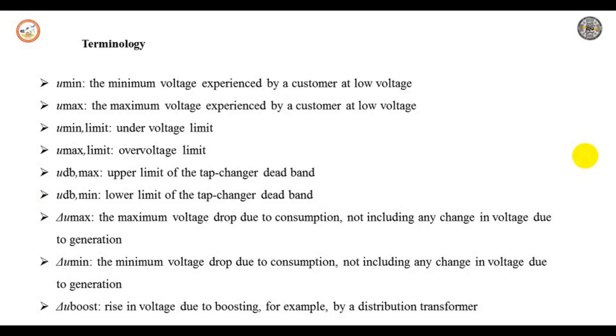Delta U-maximum is the maximum voltage drop due to consumption, which does not include any change in voltage during generation. Delta U-minimum is the minimum voltage drop due to consumption — again, it does not include any change in voltage due to generation. Delta U-boost is the rise in voltage due to boosting. These are some of the important terminologies we are going to use in the design of our distribution feeders.